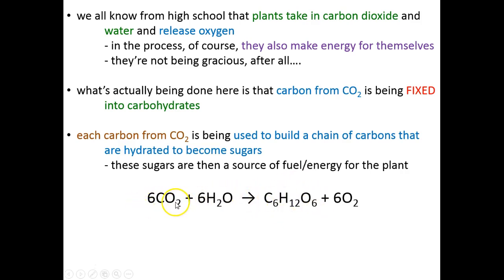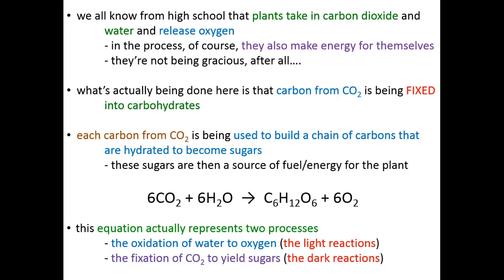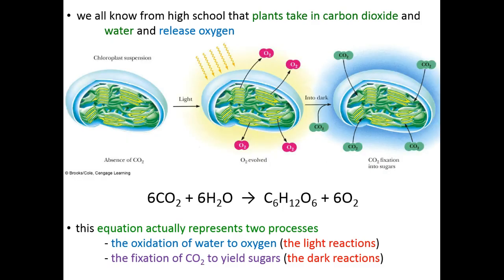The remaining six oxygen molecules are released as waste — luckily for us, because we need those oxygens to accept the final electrons of the electron transport chain. This simple equation actually represents two very complicated biochemical processes. First are the light reactions — the oxidation of water to oxygen and high-powered electrons. Second are the dark reactions — the carbon fixation reactions, where carbon dioxide is fixed and hydrated to yield glucose.